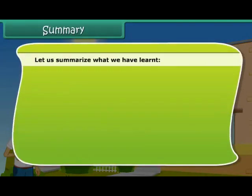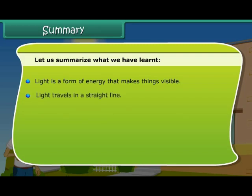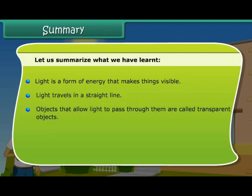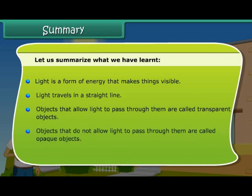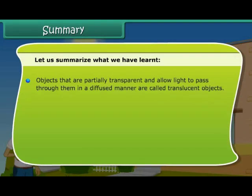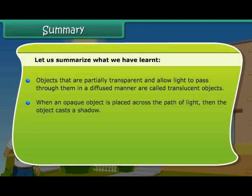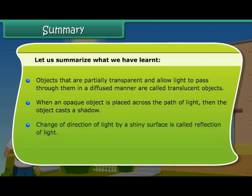Light is a form of energy that makes things visible. Light travels in a straight line. Objects that allow light to pass through them are called transparent objects. Objects that do not allow light to pass through them are called opaque objects. Objects that are partially transparent and allow light to pass through in a diffused manner are called translucent objects. When an opaque object is placed across the path of light, the object casts a shadow. Change of direction of light by a shiny surface is called reflection of light.